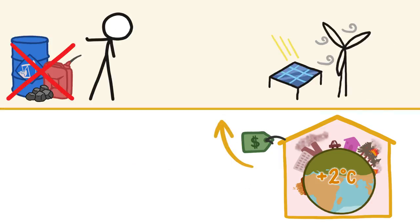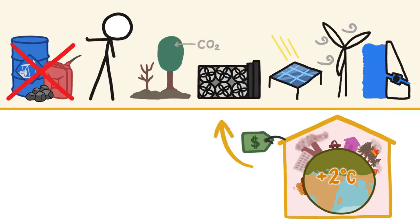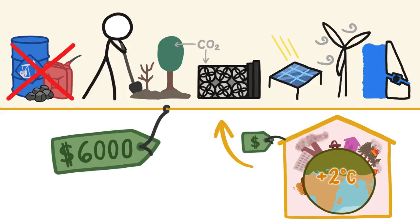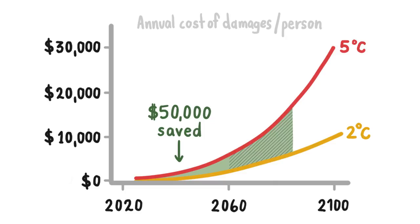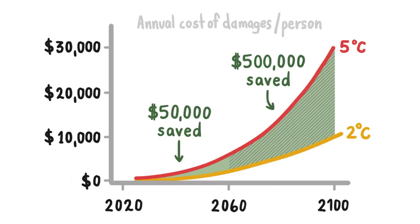To do that, we'll need to switch away from fossil fuels and pull some carbon back out of the atmosphere, which will cost, on average, $6,000 per person over the next 40 years. But it will save each of us around $50,000 in avoided damages over the same period, and a whopping $500,000 or so between 2060 and 2100.